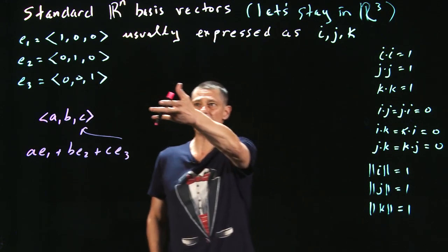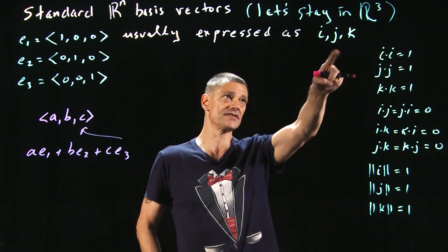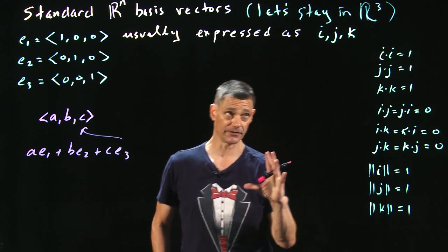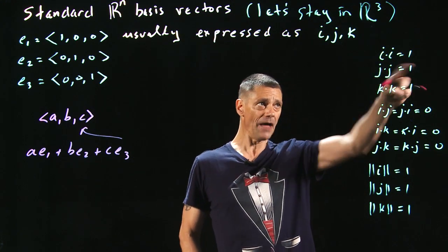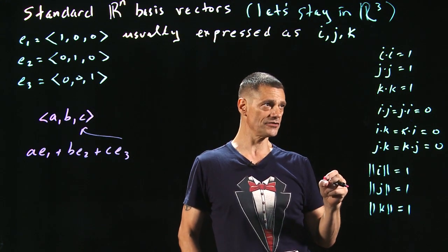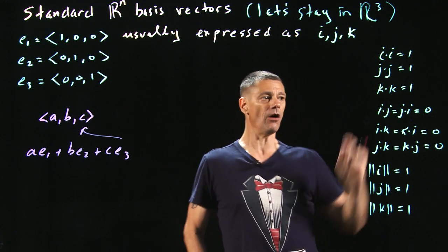In R³, these basis vectors are usually expressed as i, j, k, which you probably remember from your physics class. And incidentally, here are some great things about these. So if you dot them, i·i, j·j, k·k, these are all equal to 1.